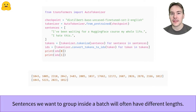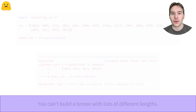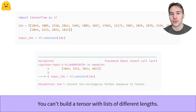When tokenizing them and mapping each token to its corresponding input IDs, we get two lists of different lengths. Trying to create a tensor or an array from those two lists will result in an error, because all arrays and tensors should be rectangular.